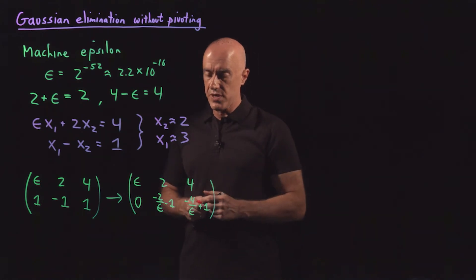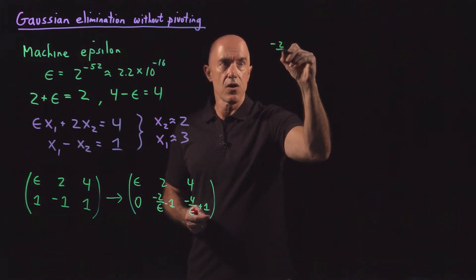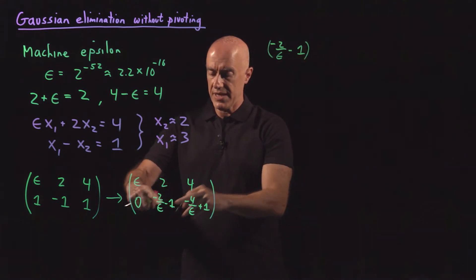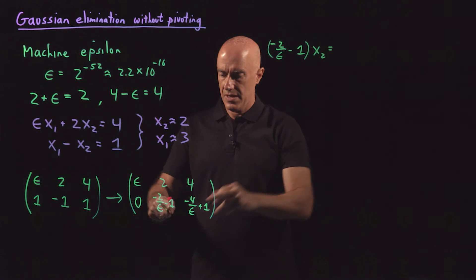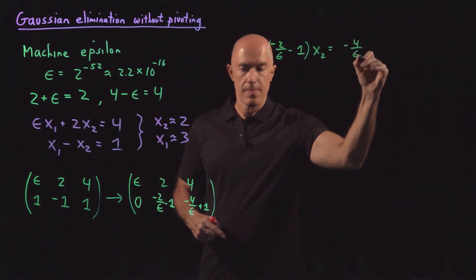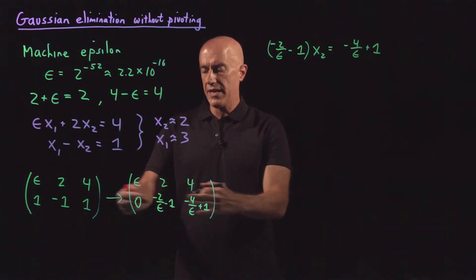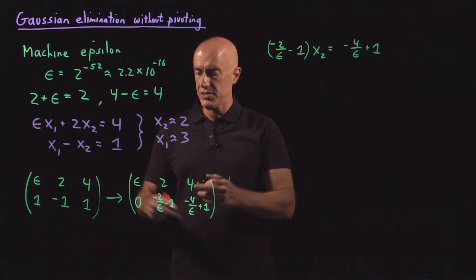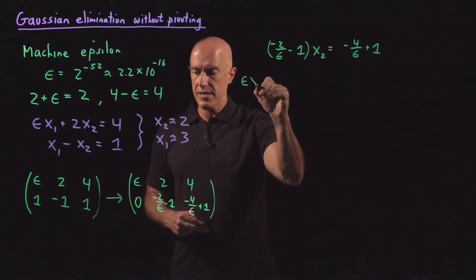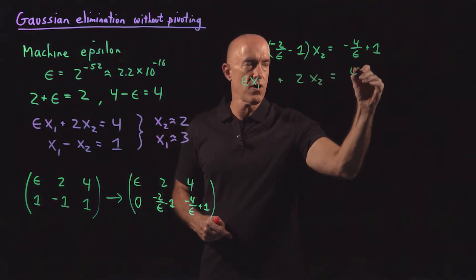So this is two equations. So let me write the equations. So minus 2 over epsilon minus 1 times x2 is equal to minus 4 over epsilon plus 1. That's the right-hand side. So I'm writing the bottom equation first and then I'll write the top equation. So the top equation is epsilon x1 plus 2 x2 equals 4.